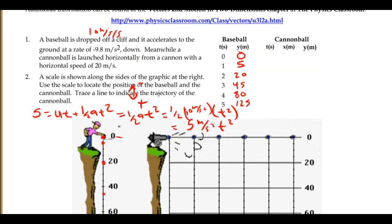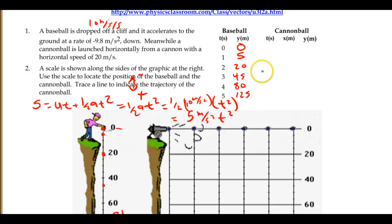Now, the cannonball, using the same times, 0 through 5, the x direction, there is no force. Since there is no force, the summation of forces in the x is equal to 0. That means that the object must move with constant velocity.